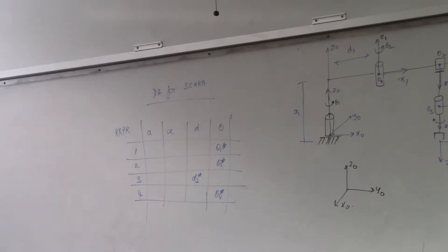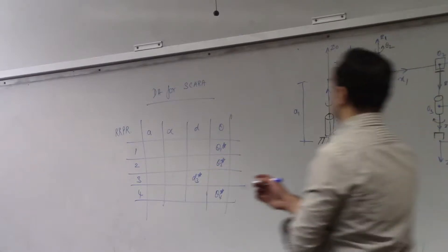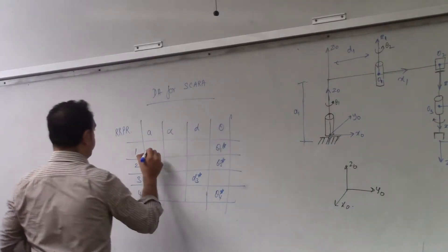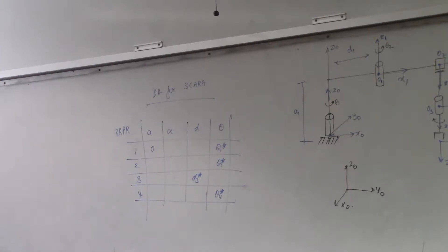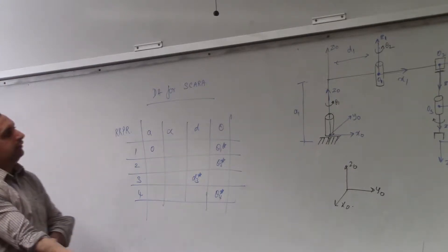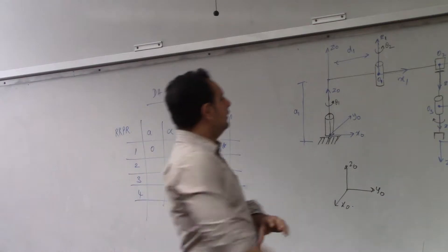A1, zero, zero. Okay, A2. D1 plus the distance between all of them.